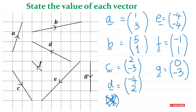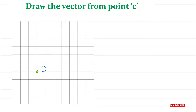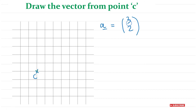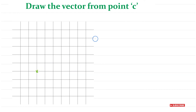Now let's draw vectors from a given point C. First example: vector a equals (3, 2). Starting from point C, three is positive so we go three to the right, and two up. From C, go one, two, three right, then two up — and that's where the vector ends. Include the arrow to show direction. That is your vector.